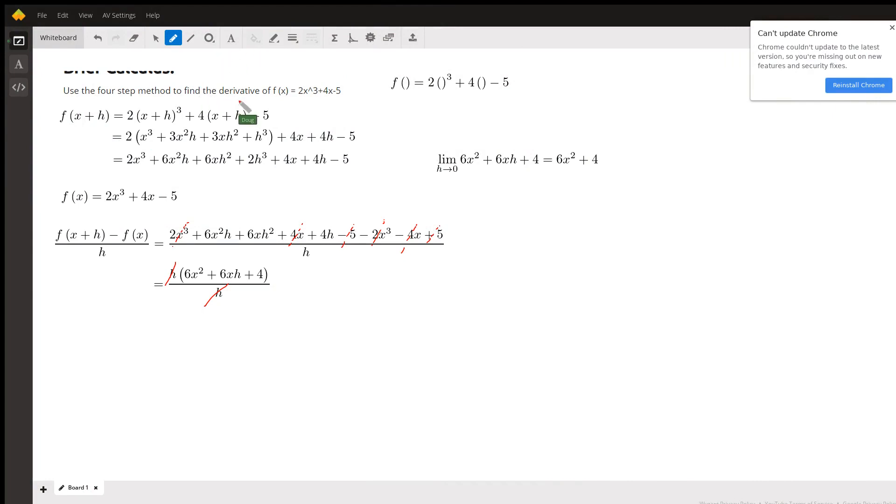Here's the four-step process for finding the derivative of this function right here: f of x equals 2x cubed plus 4x minus 5. The four-step process is also called the definition of derivative.